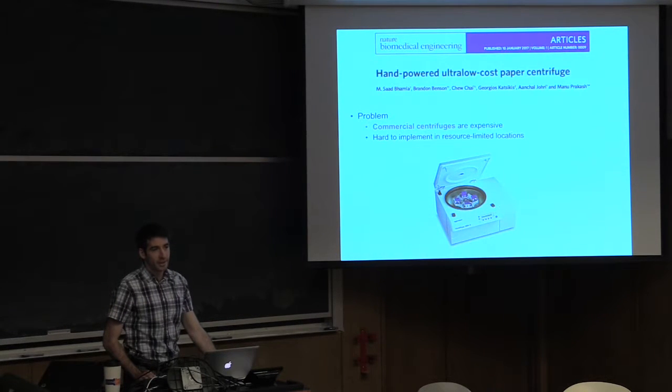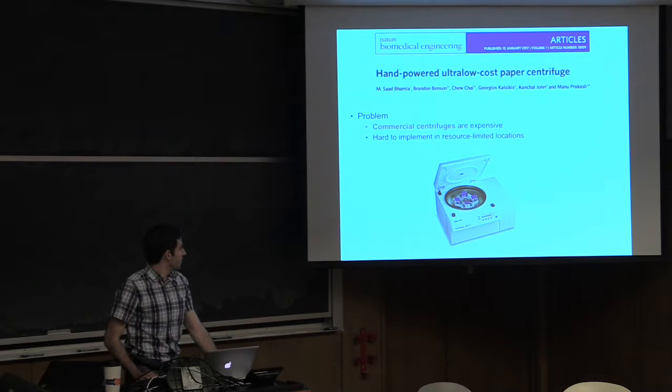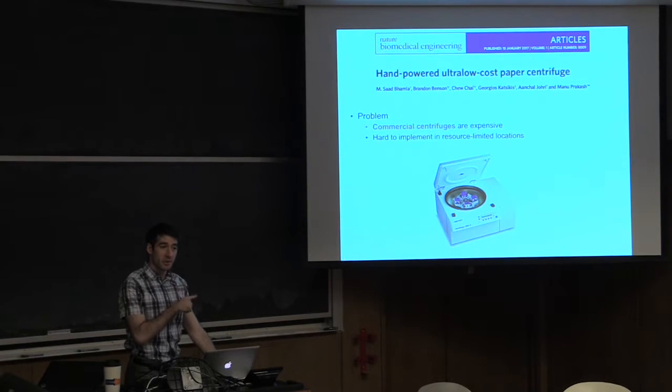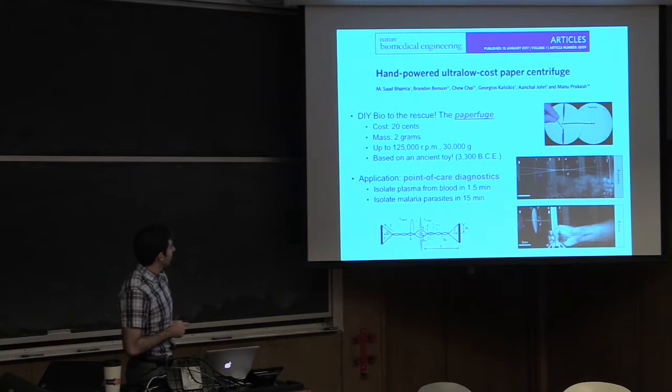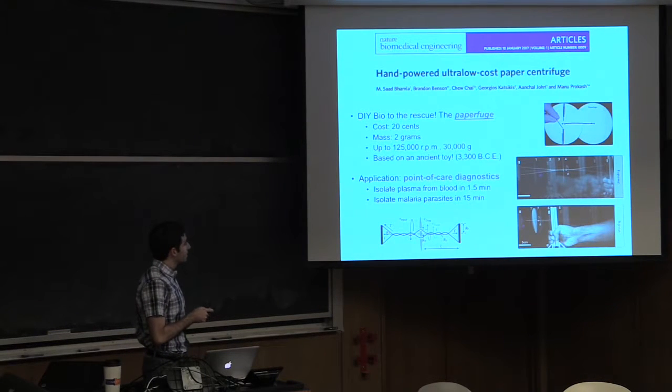If Devon is here, she knows that the ultra-centrifuge breaks every day. And so what this means is that if you want to use a centrifuge for anything in a resource-limited nation, it's essentially impractical, too expensive, and so forth. So what this paper did is they created this paper centrifuge.